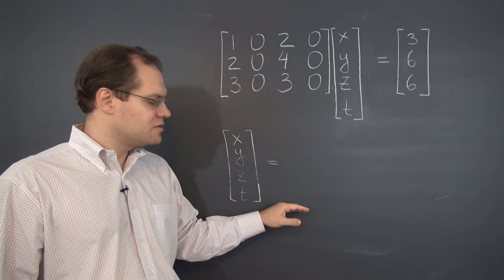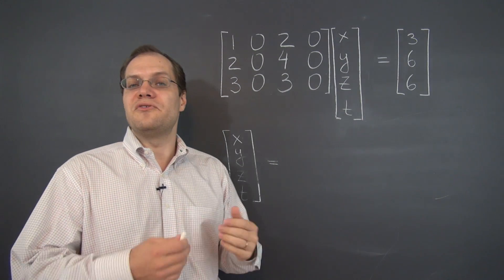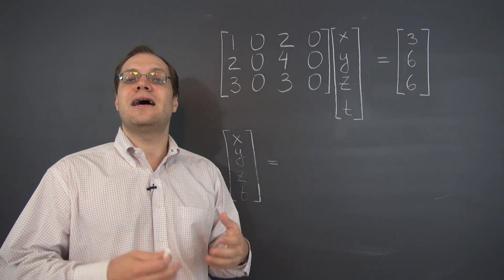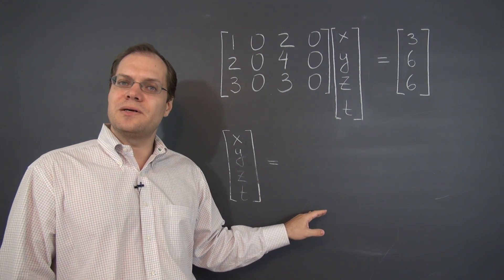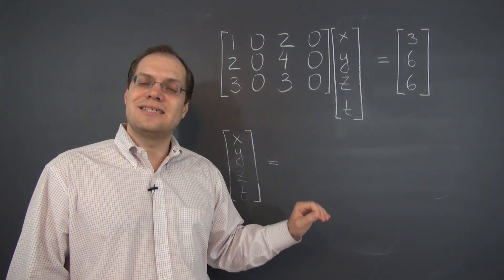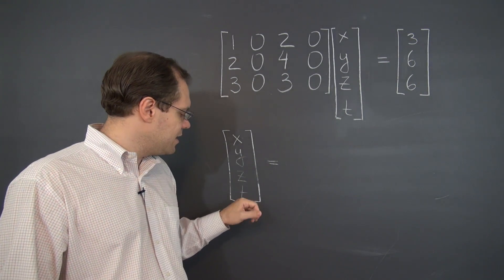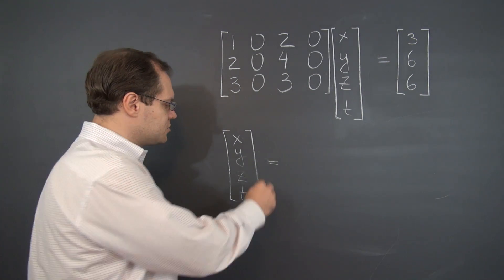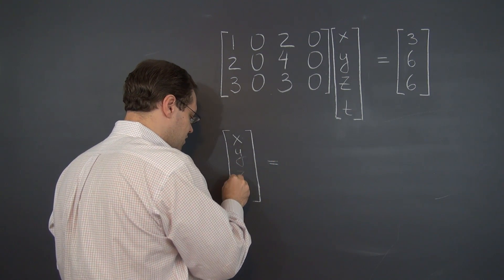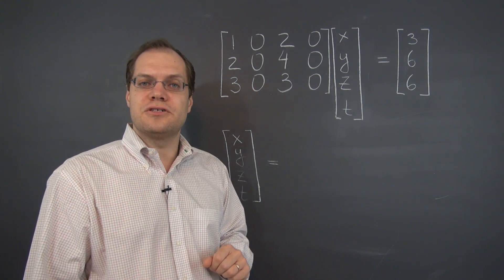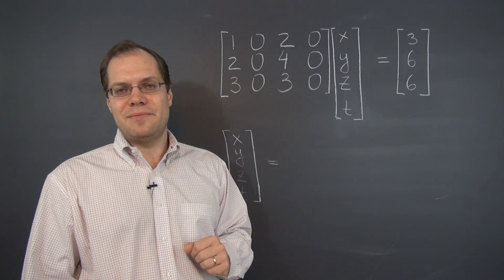So let's construct the solution according to the way we've been doing it all along, and just see how this feature manifests itself. Let's just make sure that whatever expression we obtain here is telling us that the variables y and t can have arbitrary values. Let's first think of the particular solution.